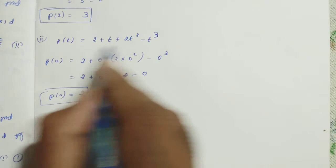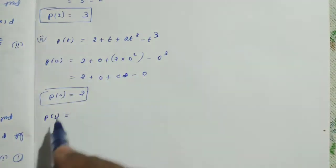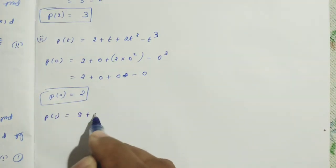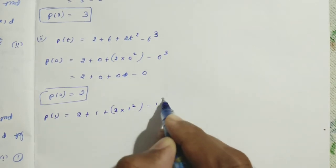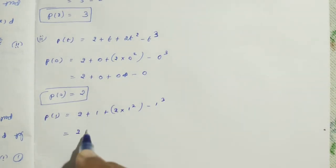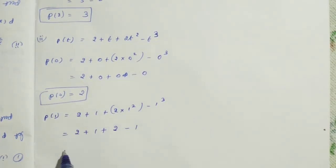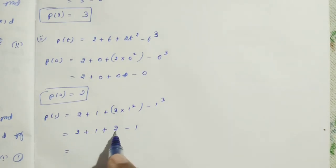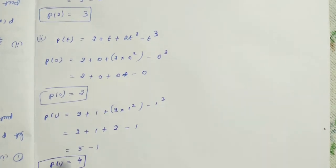Second one: in the same polynomial, find P of 1. Instead of t, put 1. So: 2 plus 1 plus 2 into 1 squared minus 1 cubed. 1 squared is 1, 2 into 1 is 2, 1 cubed is 1. Add the positive numbers: 2 plus 1 plus 2 equals 5. Then 5 minus 1. Different signs, subtraction gives 4. P of 1 is equal to 4.